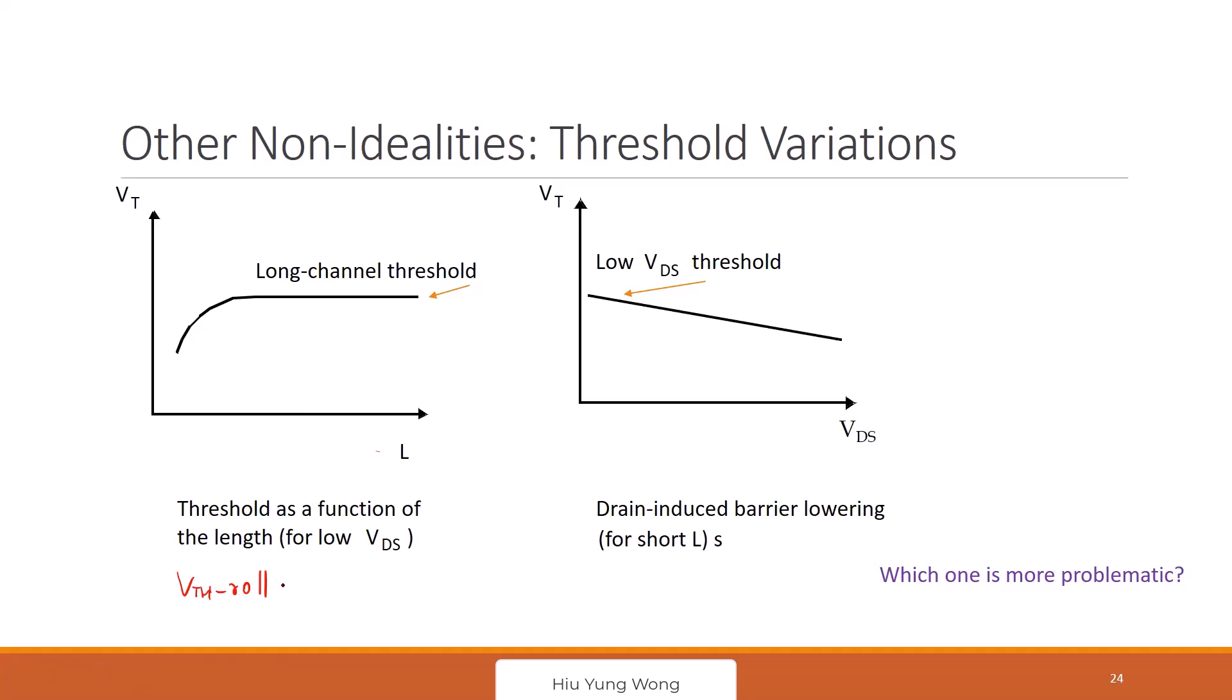And this is a kind of short channel effect. When you go to shorter channel, it is easier to turn on the transistor because the drain has a stronger control on the channel. Remember, the transistor is the gate to control the channel. But when you are so short, the drain bias actually has control on the channel. The gate is too far away.